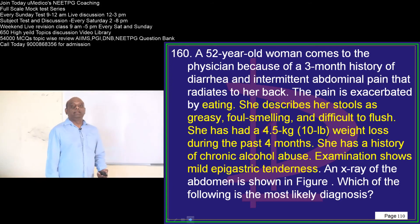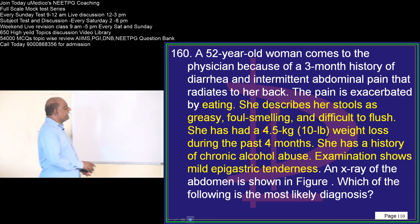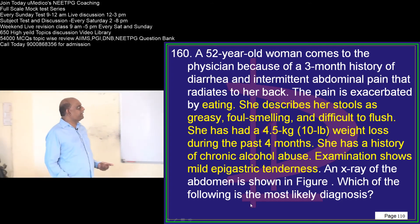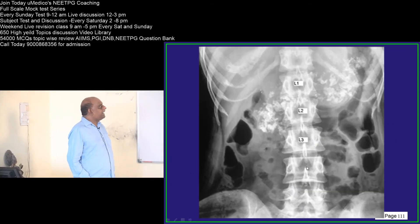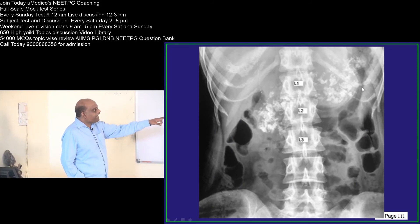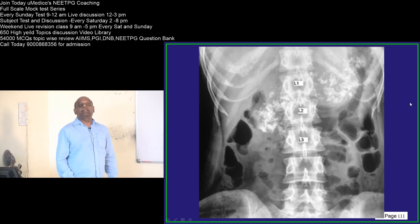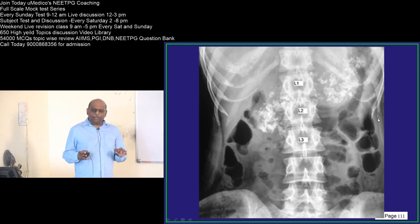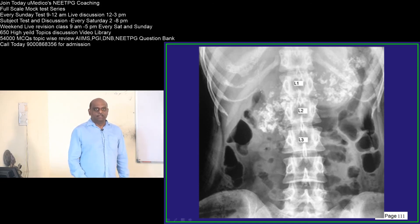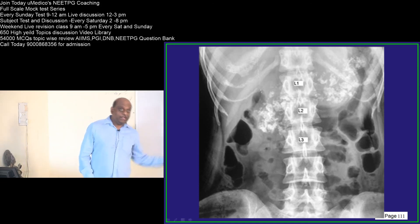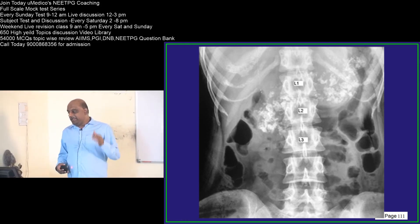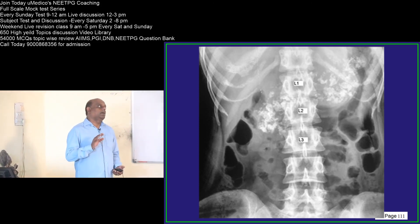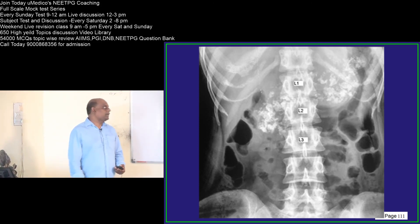A 52-year-old describes stools that are greasy, foul-smelling, and difficult to flush. There is a history of chronic alcohol abuse, and an abdominal X-ray shows calcifications in the area of the pancreas. This is a typical feature of chronic pancreatitis — the diagnosis when a person has steatorrhea and an abdominal X-ray shows pancreatic calcifications. It is a classical story of steatorrhea.